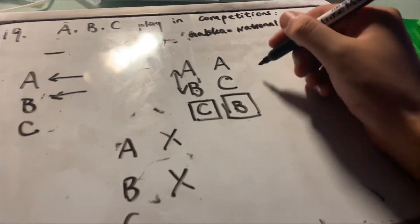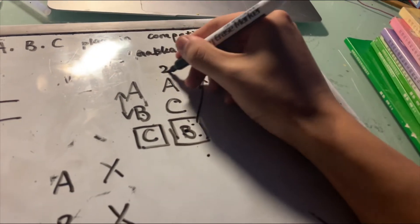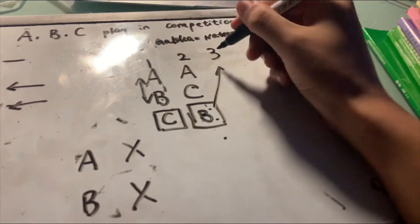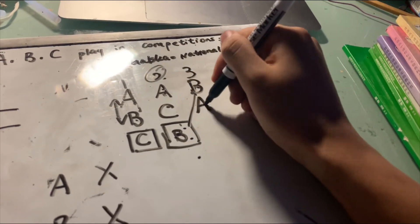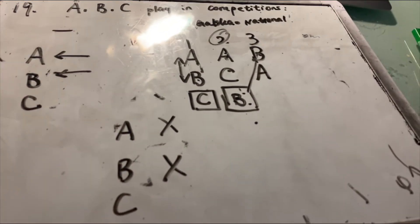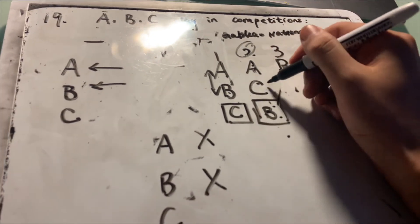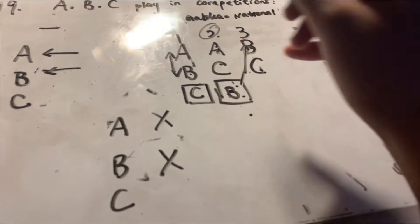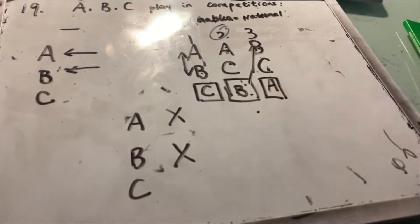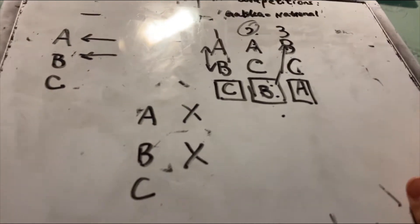Now, B — since he was the bye in the previous round — is going to be involved in the third round. C wins the second round and is also in the third round. A, having lost in round two, draws a bye. In round three, let's assume B loses and C wins.